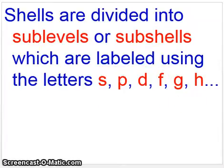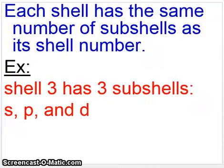Shell breaks down into sub-shell. And then each sub-shell breaks down further. But before we go there, let's make this statement. Each shell has the same number of sub-shells as the shell number. So if you're in shell number three, then you have three sub-shells. And because sub-shells are designated using letters, you have S, P, and D. The first three sub-shells.